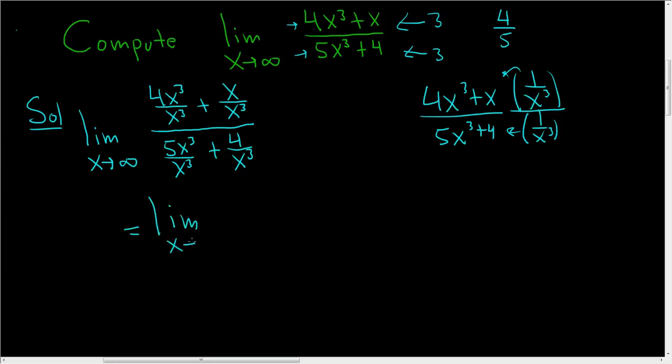As x approaches infinity, these cancel. So you just get 4 plus 1 over x squared, right? Because we have x over x cubed. And then on the bottom, we get 5 plus 4 over x cubed.